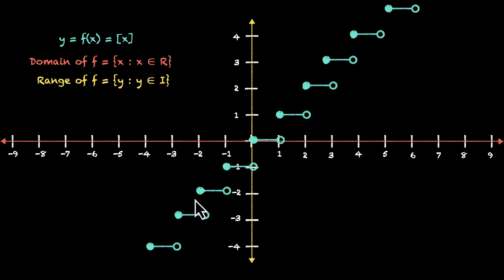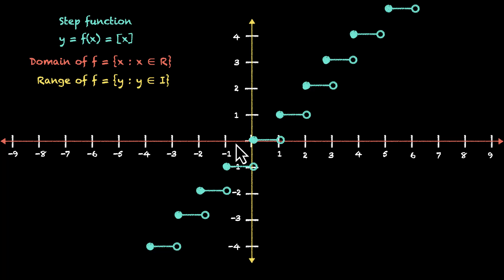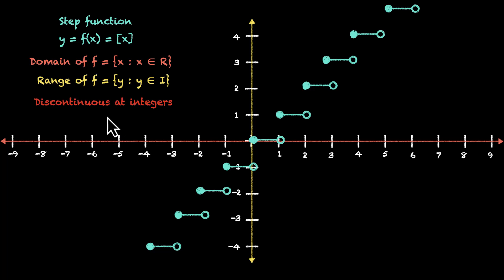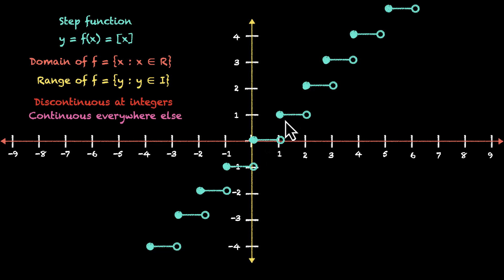The shape of this function looks like a ladder with many steps, which is why it's called the step function. Now for continuity: the function is not continuous at integers — the value jumps at x = 1, x = 2, x = 3, and so on. It's continuous everywhere else. Any non-integer value has points to its left and right giving the same output, but that's not the case for integers. This is the visual explanation; let's also do it algebraically.